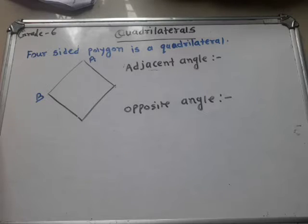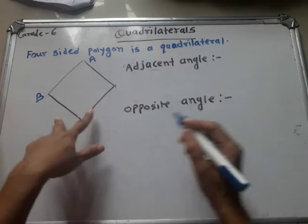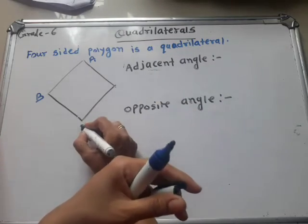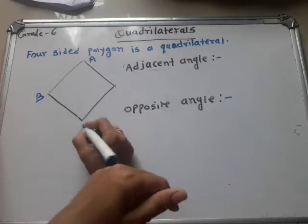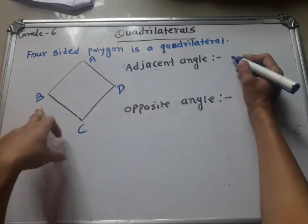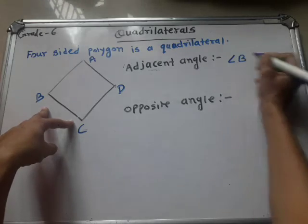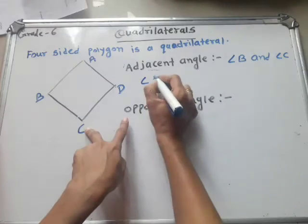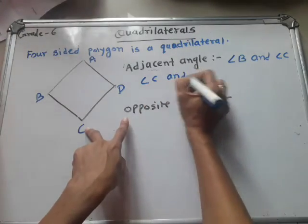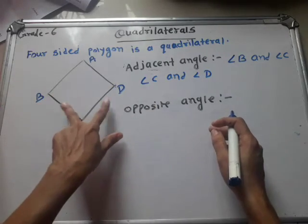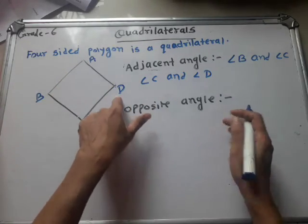Now see here — adjacent angle means neighboring angle. So angle B and angle C are adjacent angles to each other. Then angle C and angle D — these are adjacent to each other; they are neighbors. Angle C and angle D.